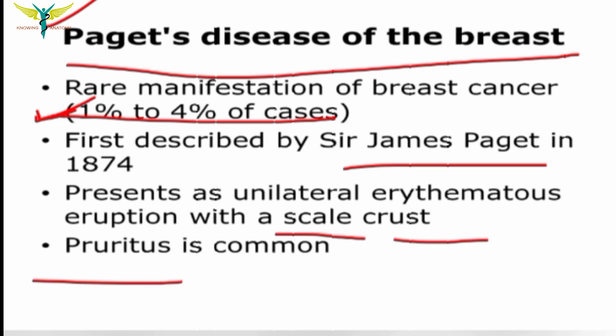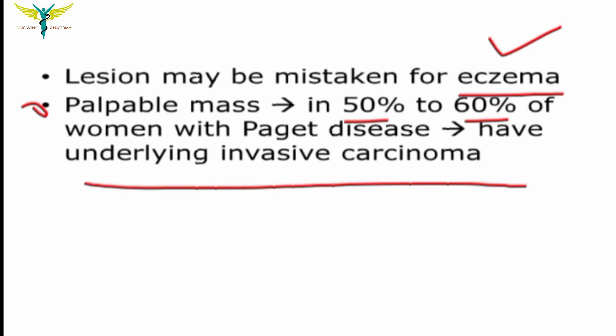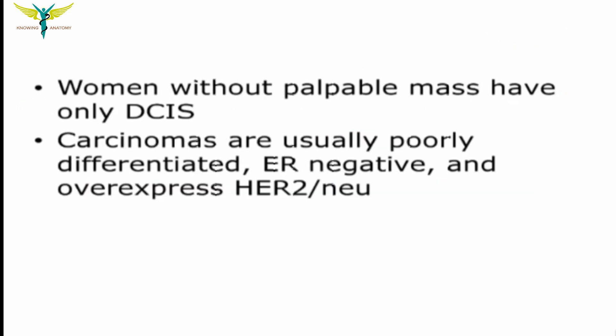Pruritus, meaning itching, is common. The lesion of Paget's disease may be mistaken for eczema. A palpable mass is present in 50 to 60 percent of women with this disease, and if a palpable mass is present, the Paget's disease will be associated with underlying invasive carcinoma.